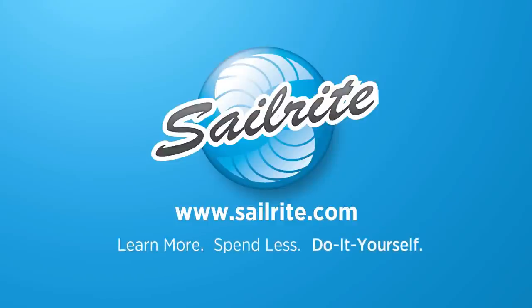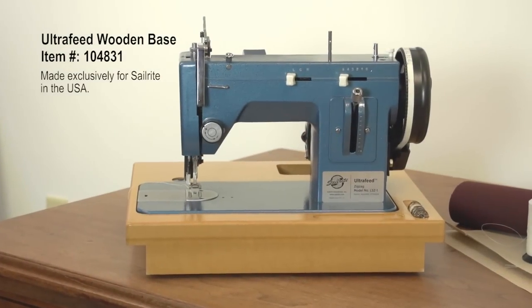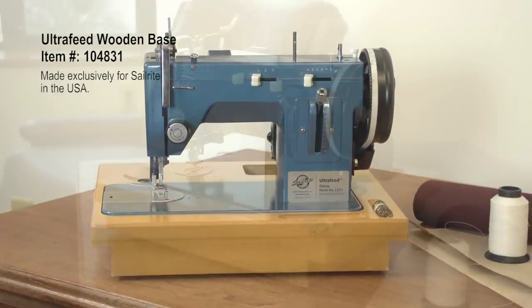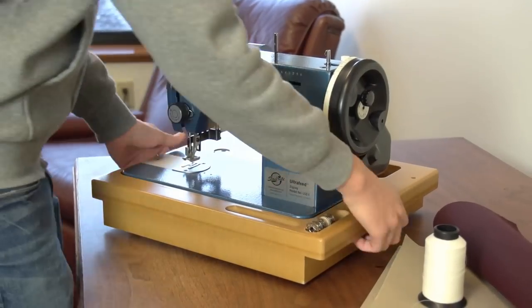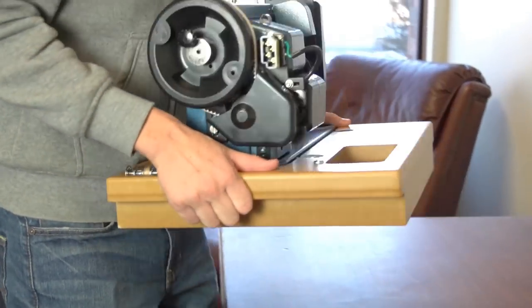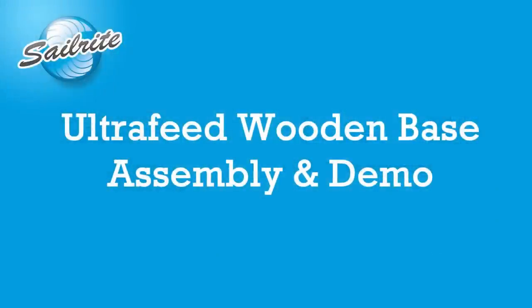This video is brought to you by Sailrite. The Ultrafeed Wooden Base is a high quality solid base for the Sailrite Ultrafeed Sewing Machine line. Upon receipt of the Ultrafeed Wooden Base you will find all the necessary hardware that you will need to install.